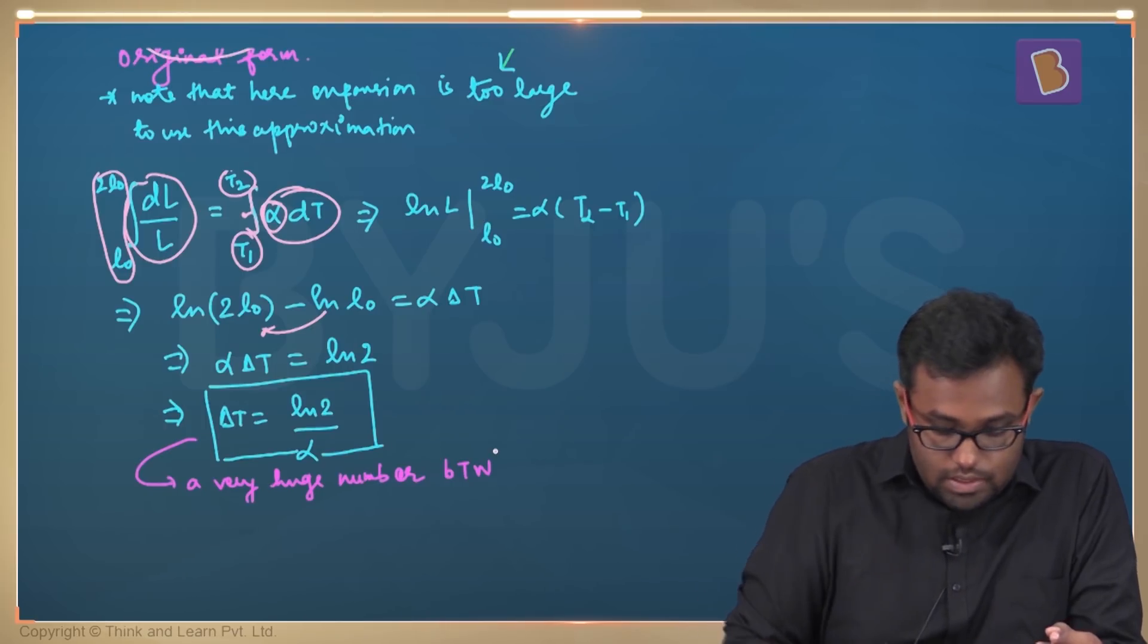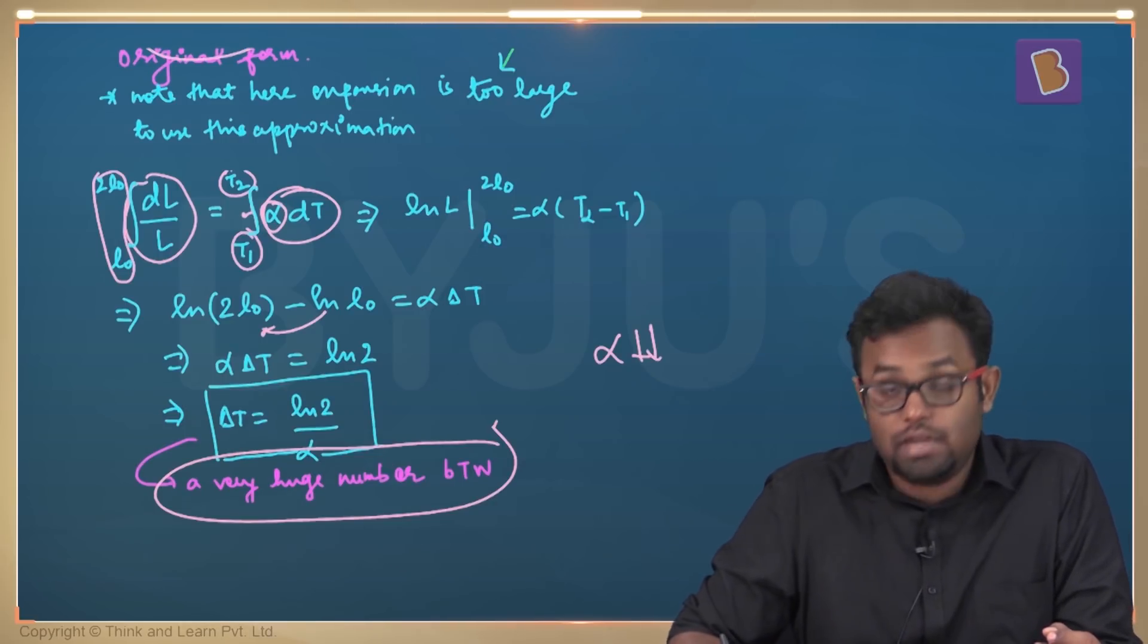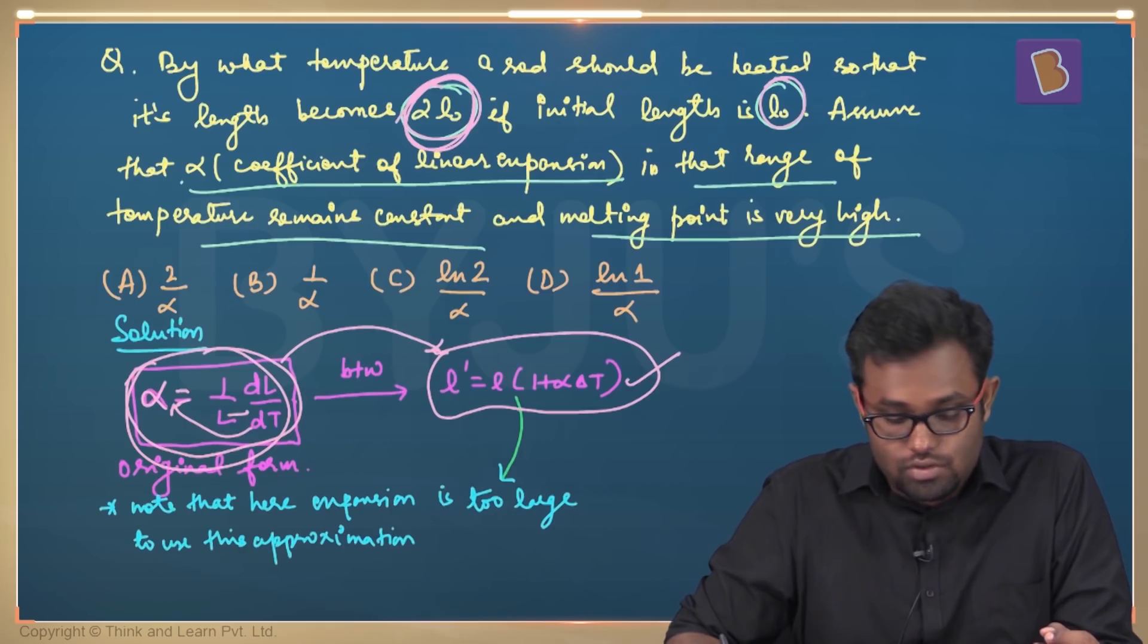Which is a very large number by the way, because alpha is a very, very small number. So LN2 by alpha is a very, very huge number. It means that you have to train the temperature by a very huge number to double the size of a rod of length L0. So the answer is LN2 by alpha.